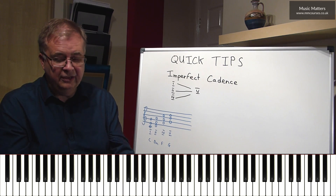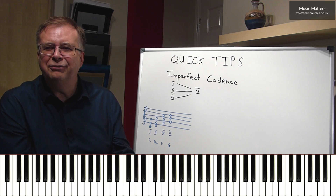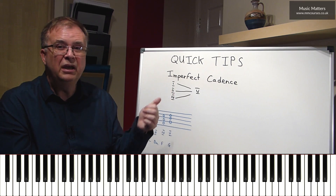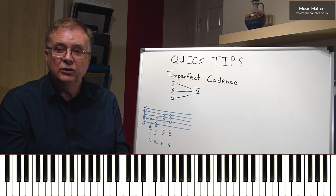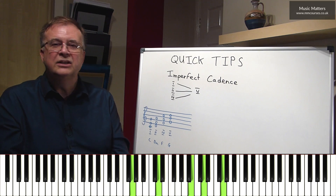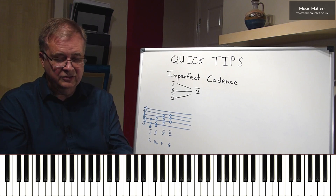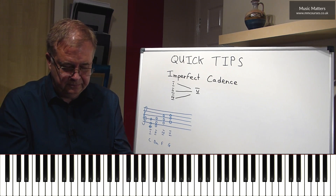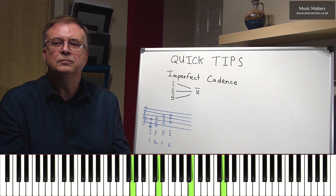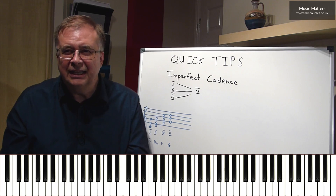I could go II to V — that sounds like this. It has a slightly different feel, partly because in a major key chord II is a minor chord — a D minor chord in this case. I could go II to V with a different spacing. Or IV to V — here's one example of IV to V, and here's another one. So you have a number of options with the imperfect cadence.